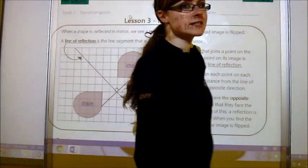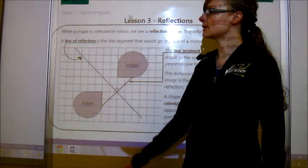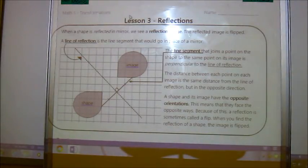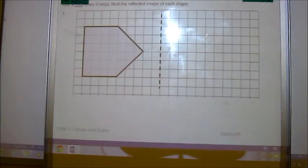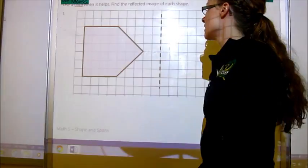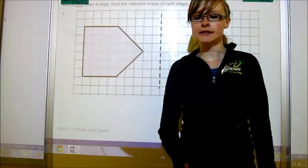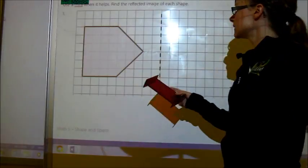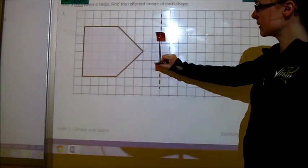So those are the things that you need to know about it. And it's all up here for you to remember. There's a picture for you to remember. Let's get to some examples. So it says use a mirror when it helps and find the reflection of each shape. So I'm not going to be able to use a mirror on the smart board. But for you to know, this is a mirror. And what you do is you place the mirror on the line of reflection. So I would place it right here.